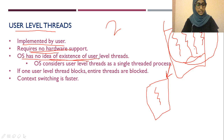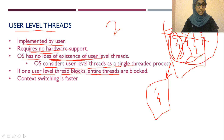If one user-level thread is blocked, all threads are blocked. This is because the kernel only knows this as a single-threaded process. When one thread is blocked, there will be no more support given to that process, so all threads get blocked. That is a major disadvantage of user-level threads.